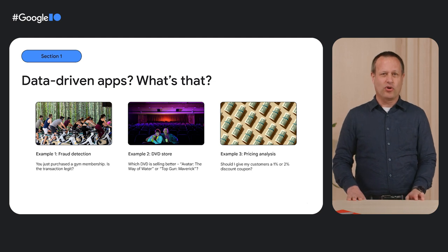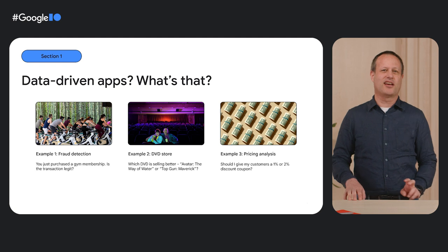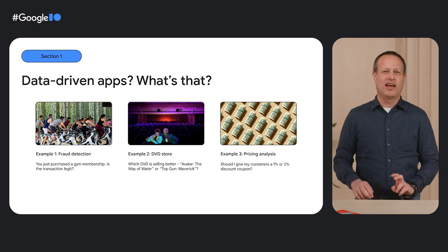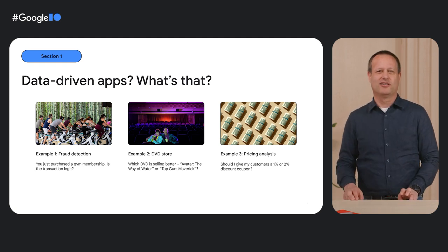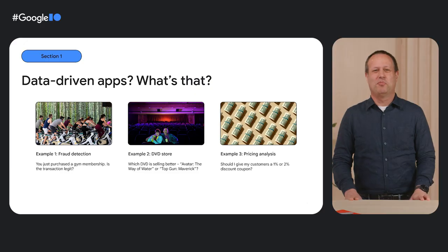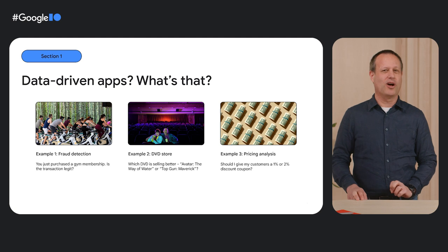The second example is a reporting example. Let's say a DVD store wants to see which DVD is selling better — Avatar: The Way of Water or Top Gun: Maverick. Did you say DVD? Have you heard of this thing called streaming? Our team likes old-fashioned examples. So we want to put all the sales data in one place and then we can run any report that we want.